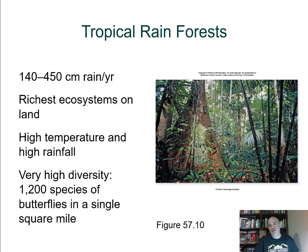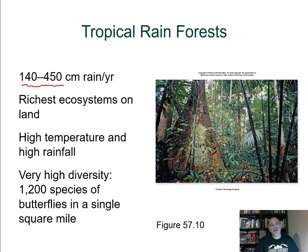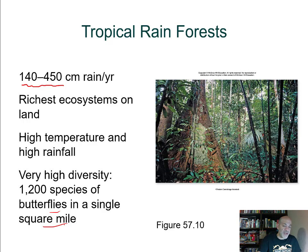Tropical rainforests have no cold winters — it is always warm. The key is rainfall: between 140 and 450 centimeters per year on average. These are very rich ecosystems with high biodiversity and great primary productivity. A single square mile of tropical rainforest can contain 1,200 species of butterflies — an example of its extraordinary diversity, which extends to plants and all other animals as well.